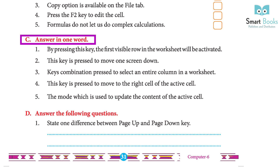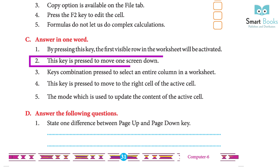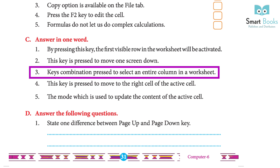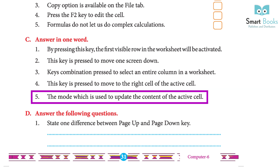C. Answer in one word: 1. By pressing this key, the first visible row in the worksheet will be activated. Answer: Home. 2. This key is pressed to move one screen down. Answer: Page Down. 3. Key combination pressed to select an entire column in a worksheet. Answer: Ctrl plus Space Bar. 4. This key is pressed to move to the right cell of the active cell. Answer: Tab key. 5. The mode used to update the content of the active cell. Answer: Edit.